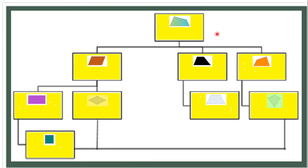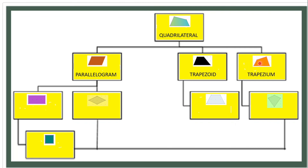In this activity, we are going to name the following quadrilaterals. The first figure is a general quadrilateral. The second is a trapezoid. The third is also a trapezoid. The next is a rectangle. Then we have a rhombus. Next is the isosceles trapezoid. Then the kite. And finally, the square. Take note of these quadrilaterals.